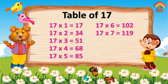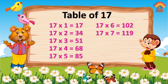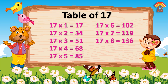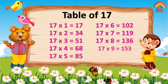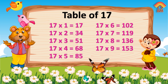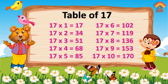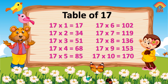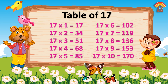Seventeen seven's are one one nine. Seventeen eight's are one three six. Seventeen nine's are one five three. Seventeen ten's are one seventeen.